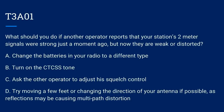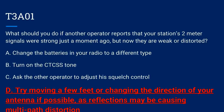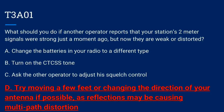T3A01. What should you do if another operator reports that your station's two-meter signals were strong just a moment ago, but now they are weak or distorted? A. Change the batteries in your radio to a different type. B. Turn on the CTCSS tone. C. Ask the other operator to adjust his squelch control. Or D. Try moving a few feet or changing the direction of your antenna, if possible, as reflections may be causing multipath distortion. Correct answer is D.